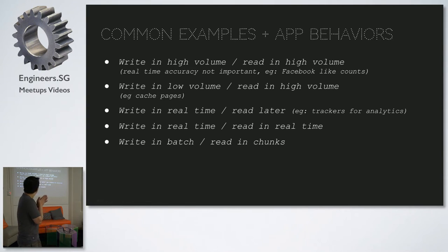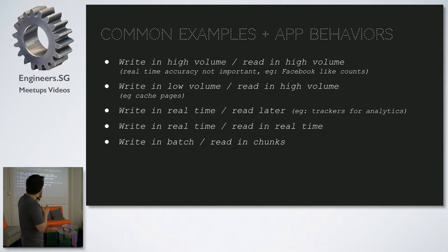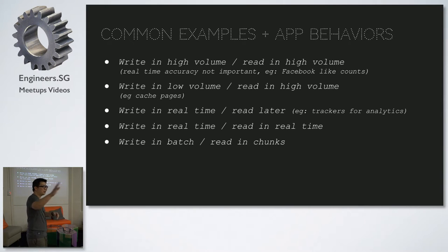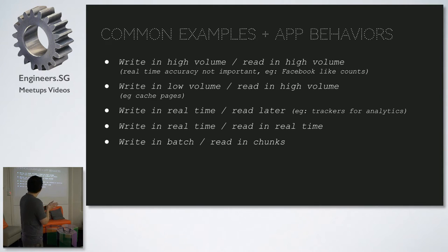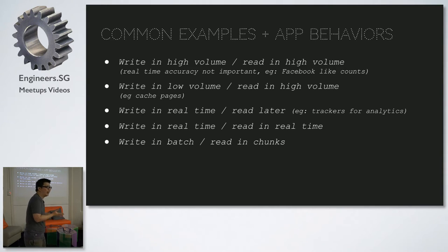These are some common app behavior patterns. High write volume, high read volume — real-time accuracy is less important. Facebook like counts aren't exactly the same across all devices; they can be off by quite a bit, and after a thousand they show '1K'. They are eventually consistent. Low write volume, high read volume — like web pages — is ideal for caching. Write in real time but read later — like analytics. Write in real time and read in real time — like chat messages — is really hard to cache.